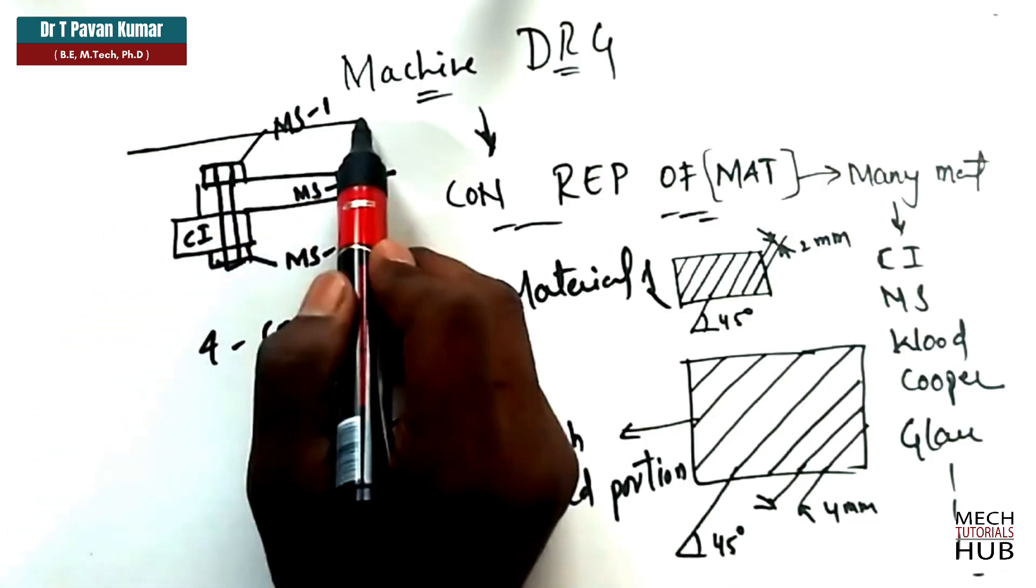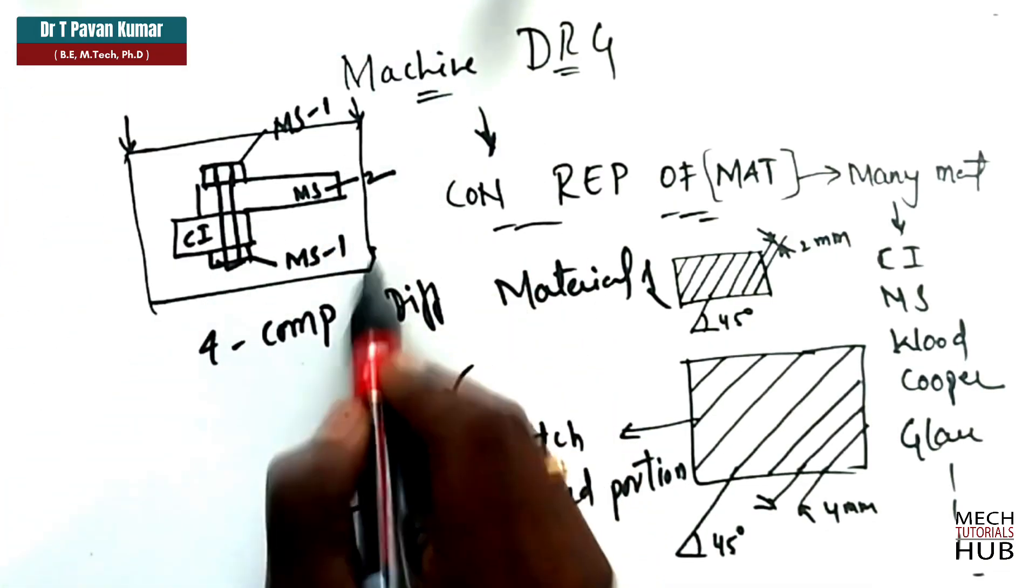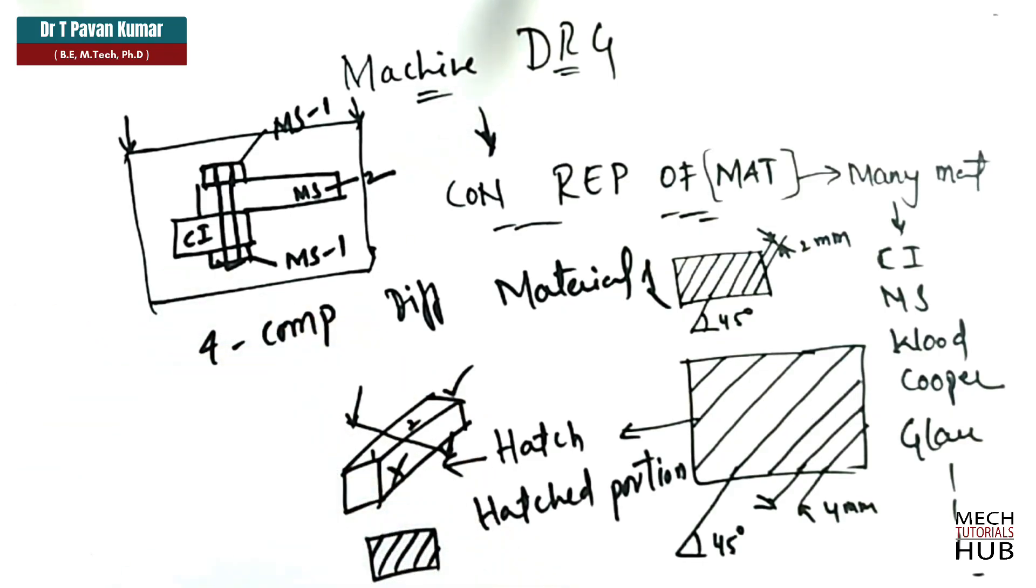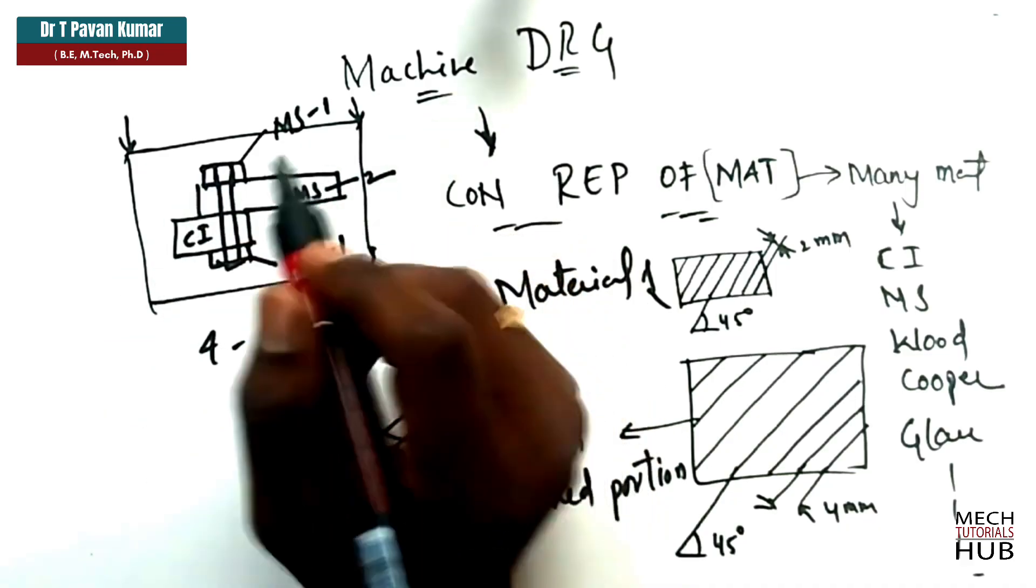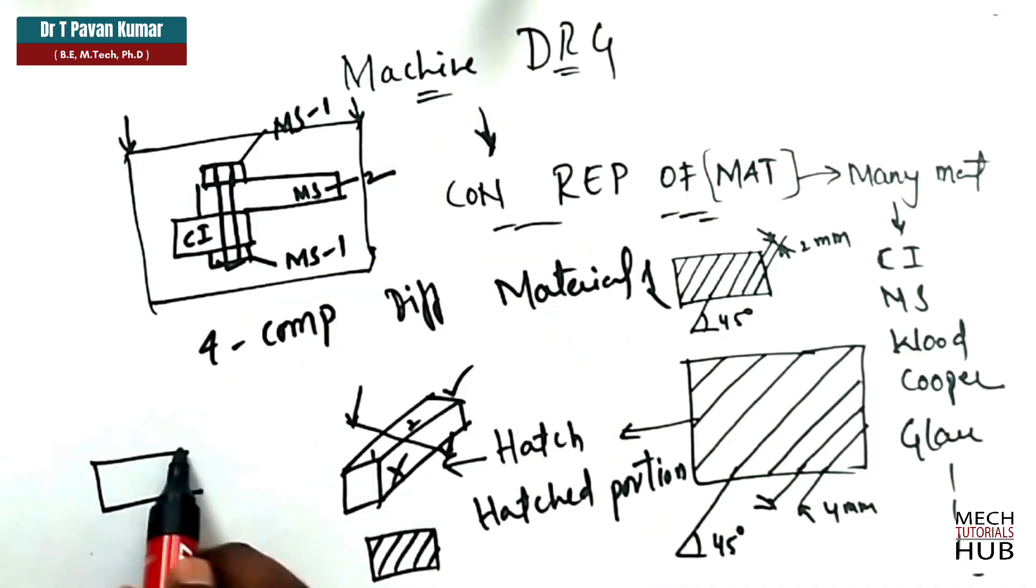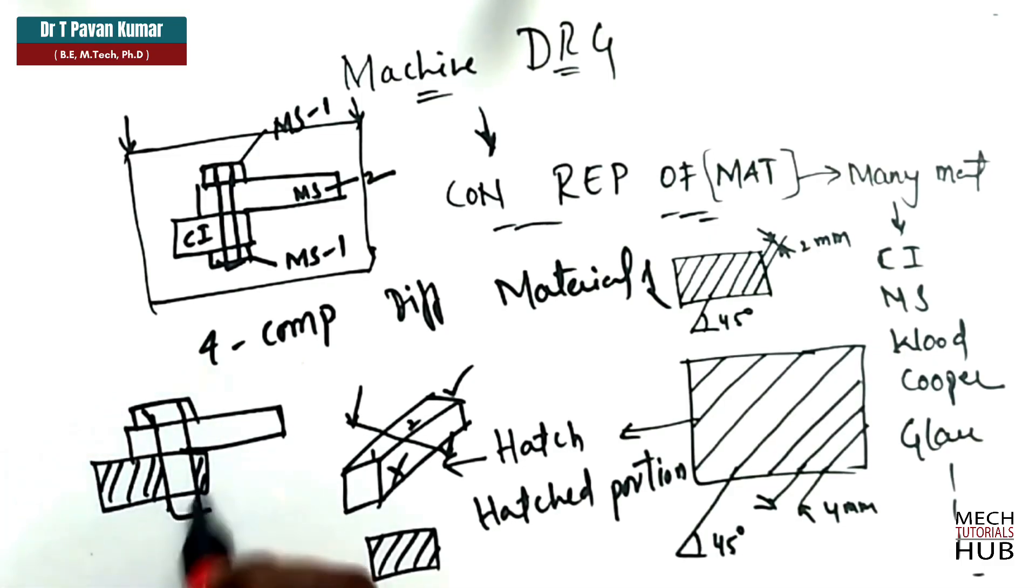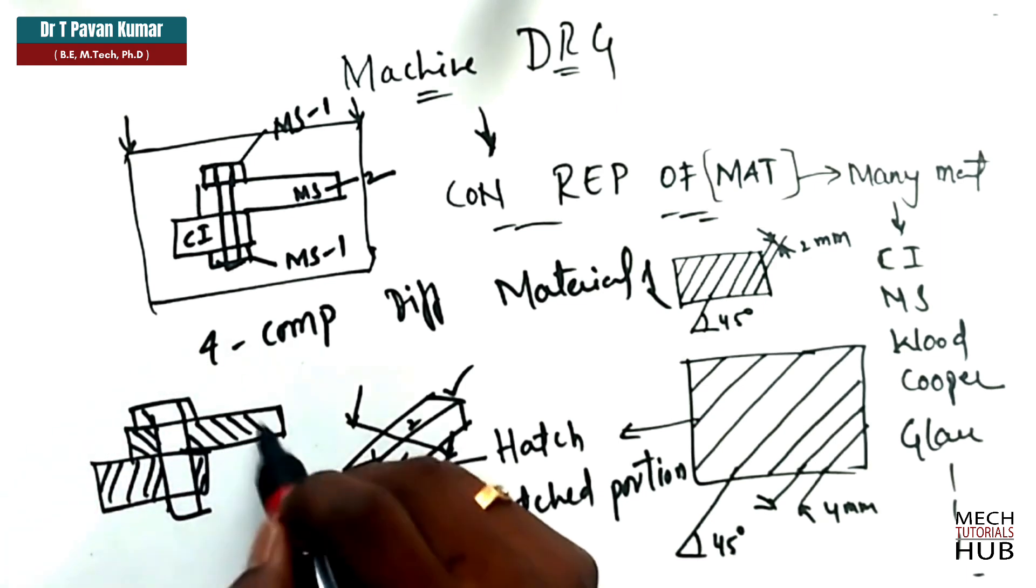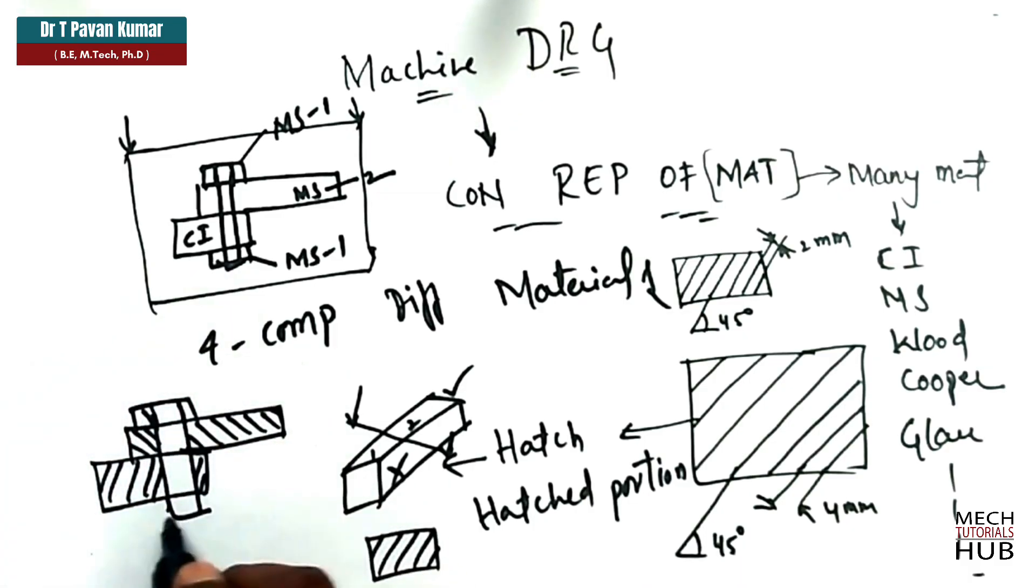When you cut the model from top to bottom, when you cut the model from top to bottom with a cutting plane what you call, then what happens? All the components will cut from top to bottom. It will pierce off. So, what happens in such cases? You need to represent them. So, the representation is going to be something like this. We draw both the components with a bolt with some hatching. Maybe cast iron with this inclination of 45 degrees. Maybe mild steel with some other minus 45 degrees inclination.